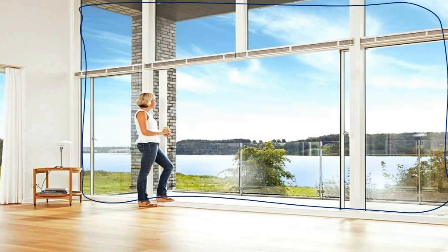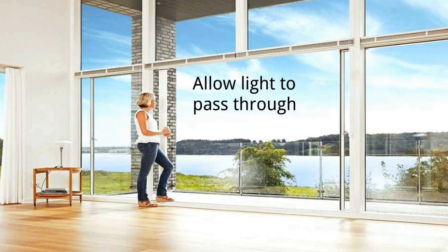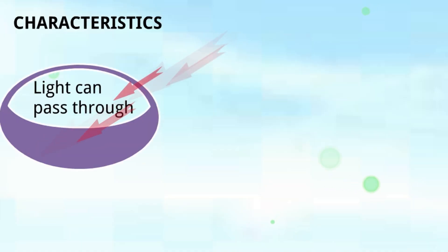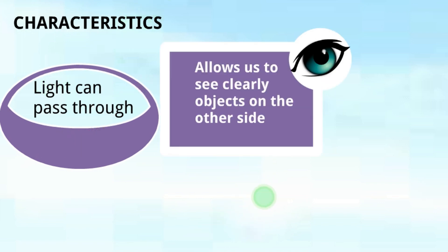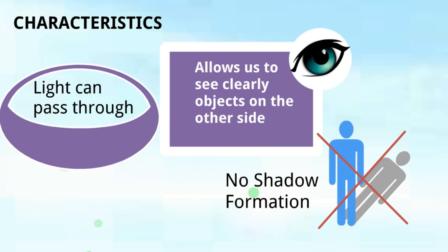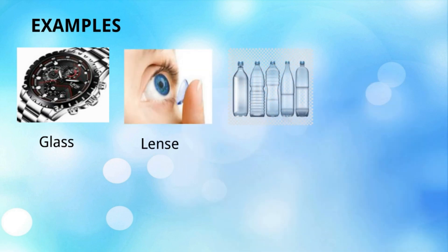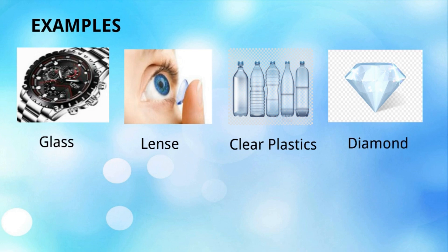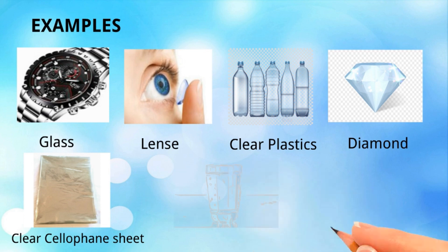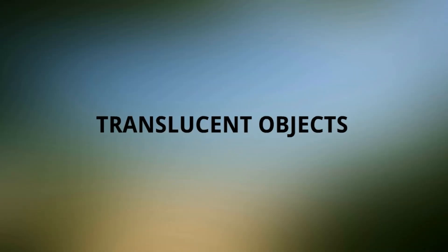Transparent objects — for example, someone is watching outside through glass and is able to see everything outside clearly because light is coming from outside to our eyes. Glass allows light to pass through. Characteristics: light can pass through completely, allows us to see clearly the objects on the other side, and no shadow is formed since light is not obstructed. Examples: glass, lens, clear plastics, diamond, clear water, and air.